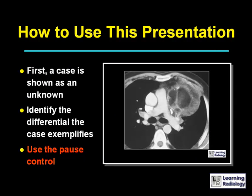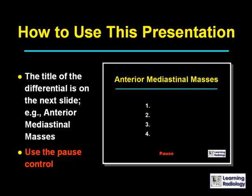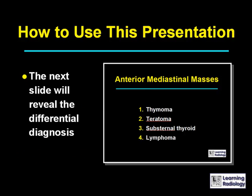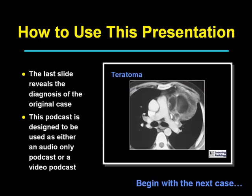How this presentation works is: first, the case is shown as an unknown. You are to identify the differential that the case exemplifies — use the pause control on your computer or MP3 player. The next slide will be the title of the differential, in this case, anterior mediastinal masses. Again, use the pause control. The next slide will reveal the differential diagnosis, and the last slide reveals the diagnosis of the original case shown. This podcast is designed to be used as either an audio-only podcast, video-only podcast, or both. Let's begin with the next case.